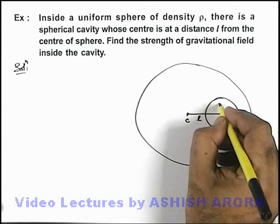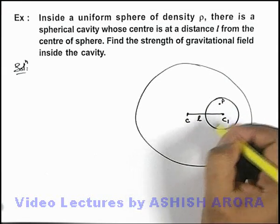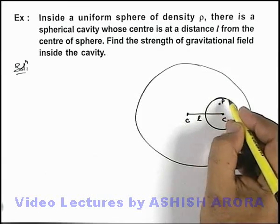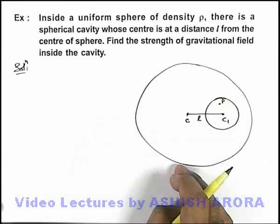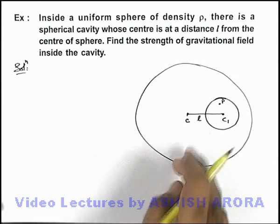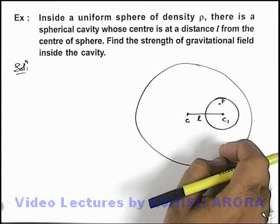Say we are required to find the gravitational field at a point P inside the cavity. Then the procedure will be similar to what we have done in the previous example. Due to the complete sphere we find out the gravitational field at P and we subtract the gravitational field due to the mass which resides within the cavity.